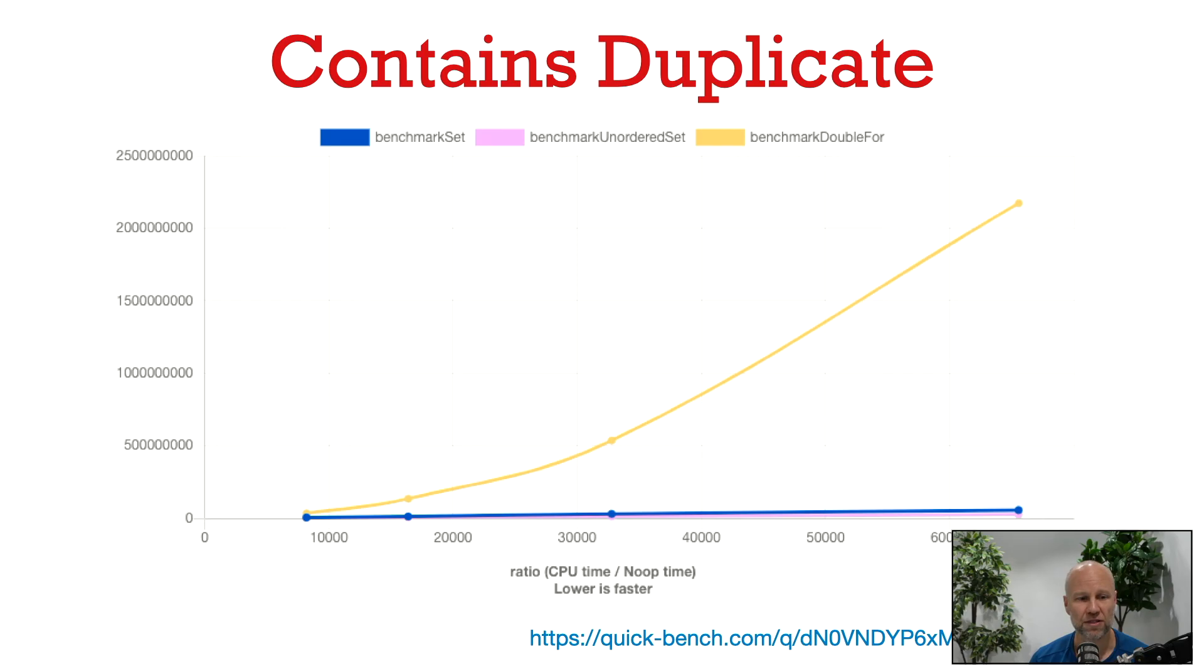Here's a comparison of the double for loop algorithm for contains duplicate. That's the yellow line, with other approaches based on data structures. So the pink line is based on a hash table, and the blue line is based on a balanced binary search tree. The size of the instances here range from about 8,000 to about 64,000.